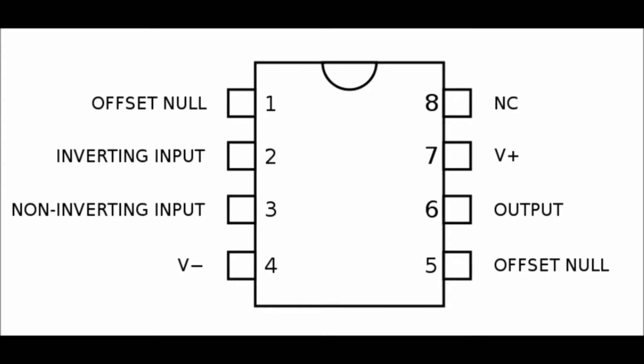For our circuit, we ignore the offset and NC pins. Going counterclockwise around the op-amp, the pins are as follows: offset, inverting input, non-inverting input, negative DC voltage, offset, output, positive DC voltage, and NC.